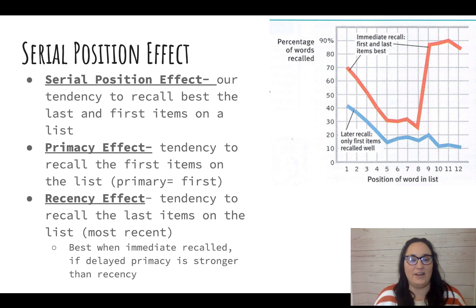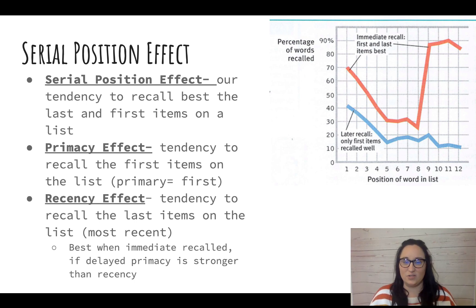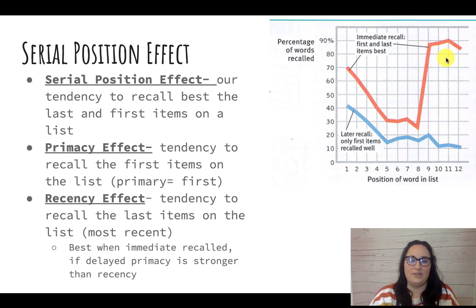The serial position effect is our tendency to remember the beginning and the end of a list. Looking at the graph, you can see that at the beginning recall is high, there's a big drop-off in the middle, and then it goes back up at the end — that's the serial position effect.